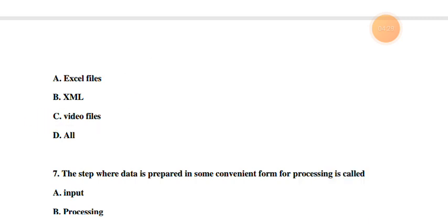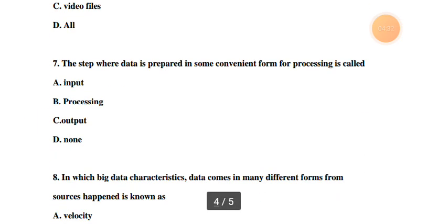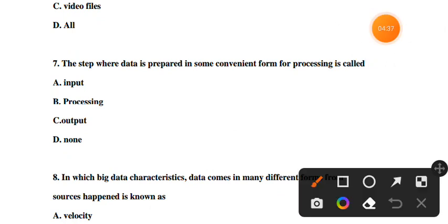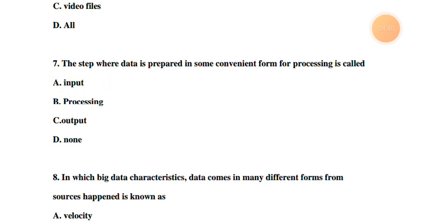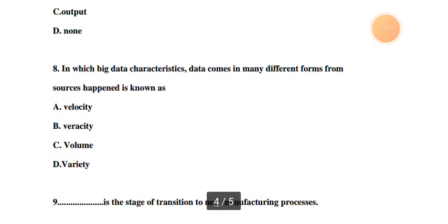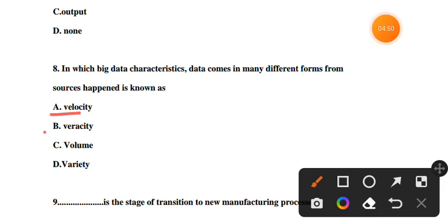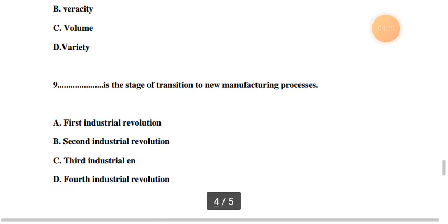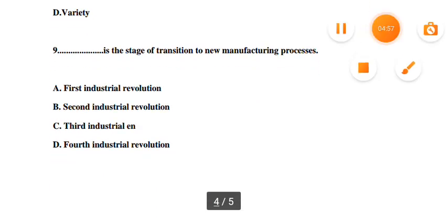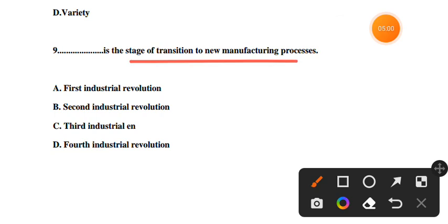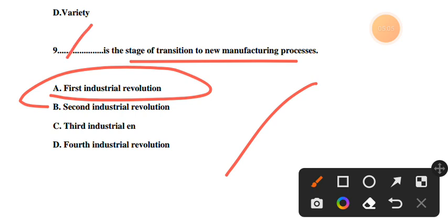Number seven: In which stage is data prepared in some convenient form for processing? The answer is data preparation. In big data characteristics, data comes in many different forms from sources - this is known as variety. Veracity, volume, and variety are all big data characteristics. Dash is the stage of transition to new manufacturing processes - this refers to the first industrial revolution.